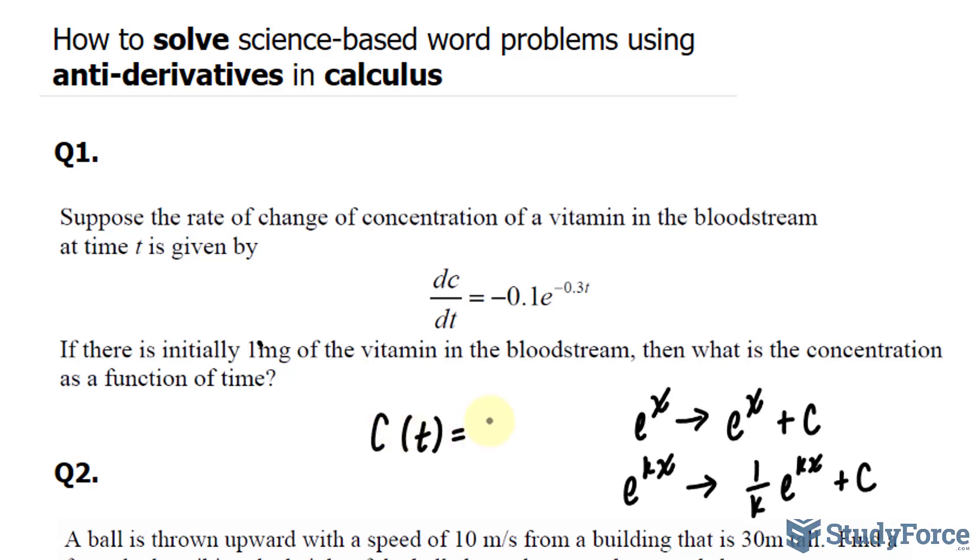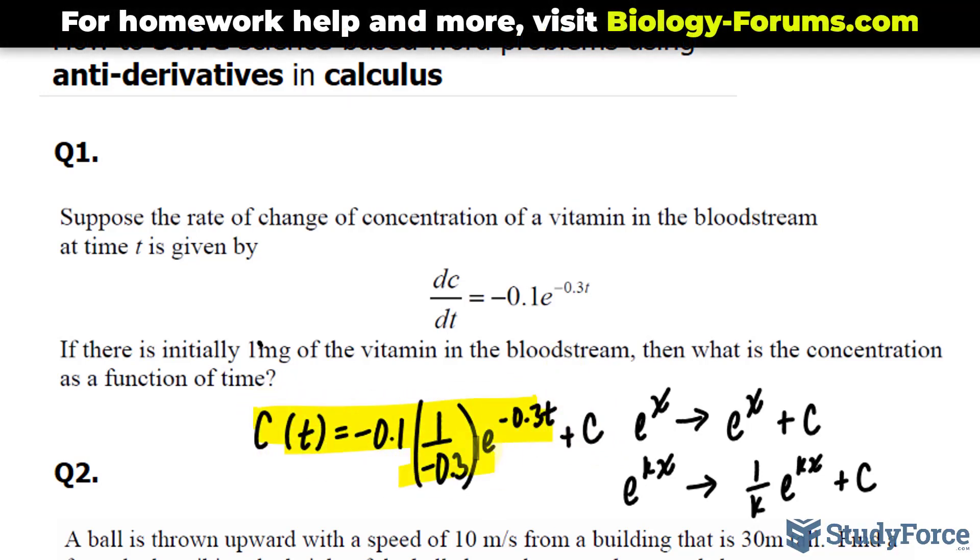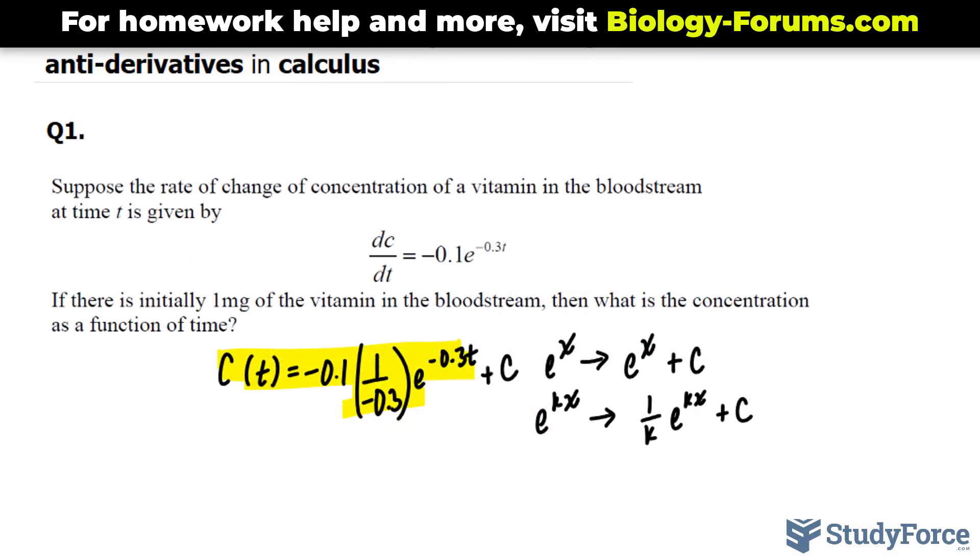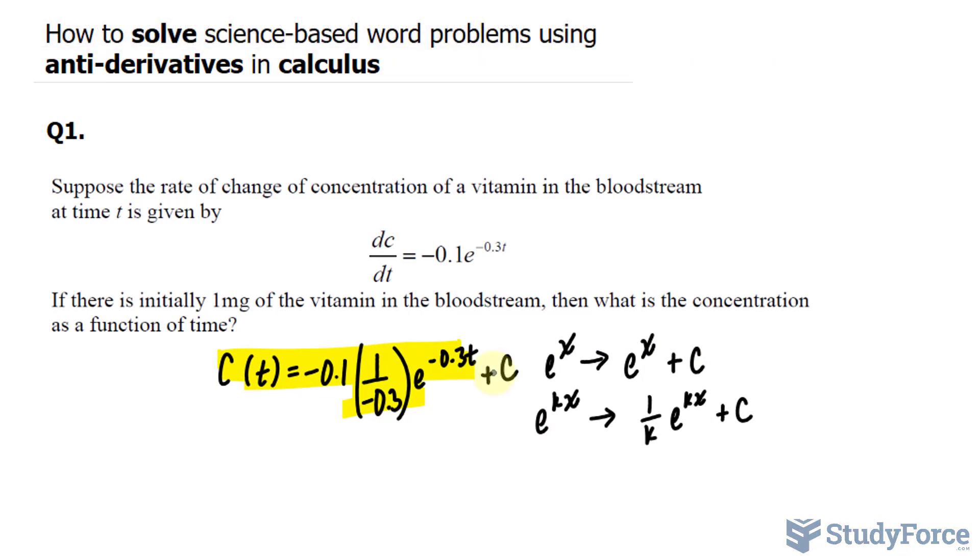So applying this rule, we have negative 0.1, that's this part, and now we'll write down 1 over our k is negative 0.3, multiplied by e to the power of negative 0.3t plus c. So what you see here represents the function before the derivative was taken. Now, of course, the original equation didn't have a plus c, it had a number instead. That's just a placeholder.